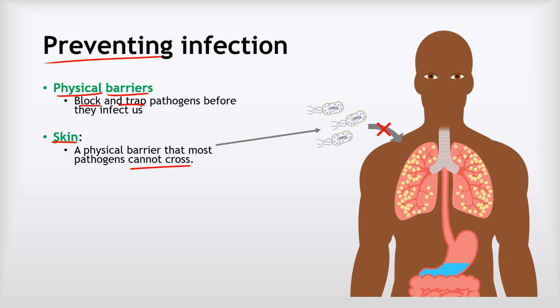For example, if your friend's got a cold and they cough on you and some of it lands on your skin, that in itself isn't enough to infect you because the pathogen cannot cross through your skin. That's also why getting cuts can be dangerous — if we get a cut, we break that physical barrier and allow pathogens to gain direct access to our blood. That's why it's important to clean up after a cut and treat it with a plaster.